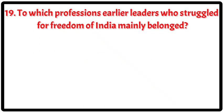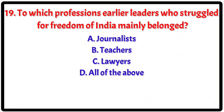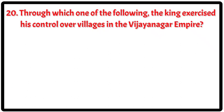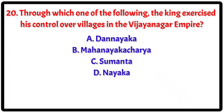Question 19: To which professions did earlier leaders who struggled for freedom of India mainly belong? Your options. The correct answer is D — All of the above. Question 20: Through which one of the following did the king exercise his control over villages in the Vijayanagara empire? Your options.